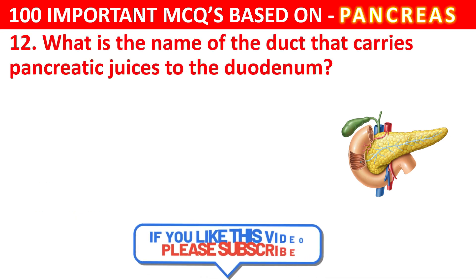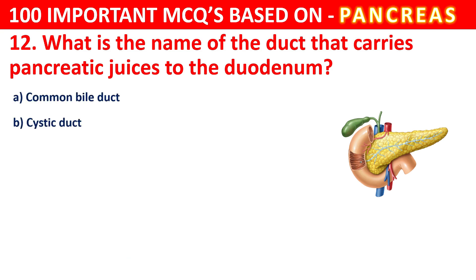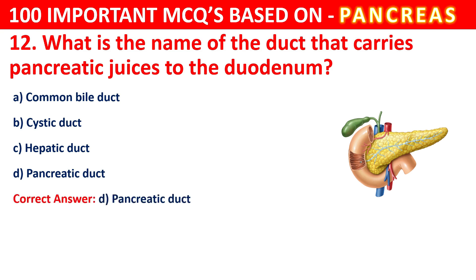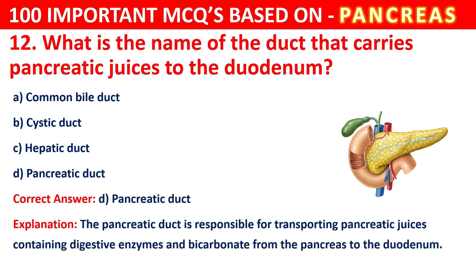Question 12. What is the name of the duct that carries pancreatic juices to the duodenum? Your options are Common Bile duct, Cystic duct, Hepatic duct, or Pancreatic duct. The correct answer is D, that is Pancreatic duct. The pancreatic duct is responsible for transporting pancreatic juices containing digestive enzymes and bicarbonate from the pancreas to the duodenum.